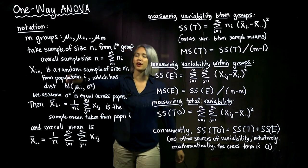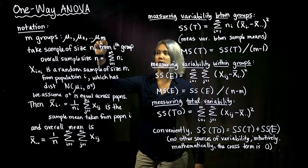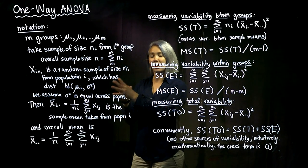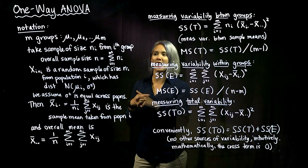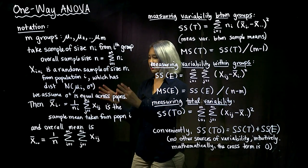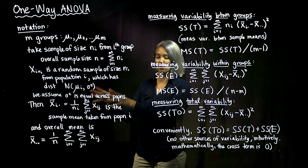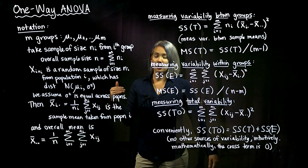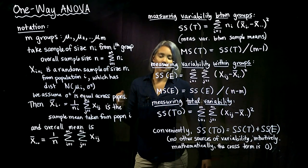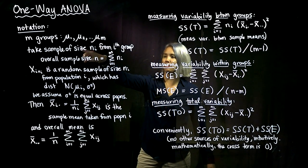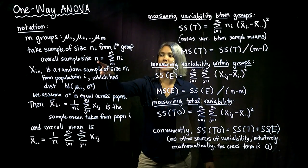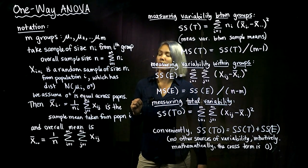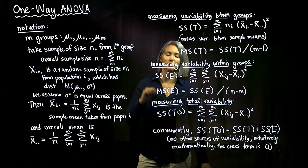We have m groups, so that means we have m different means: mu1, mu2, up to mu_m. What we do is take a sample of size n_i from the i-th population. So you go to population 1 and take a sample of size n1, then population 2 and take a sample of size n2, and so on. All these sample sizes don't have to be the same across the different populations. Once you have that sample from each population, we get our total sample size n by just adding up all the n_i.